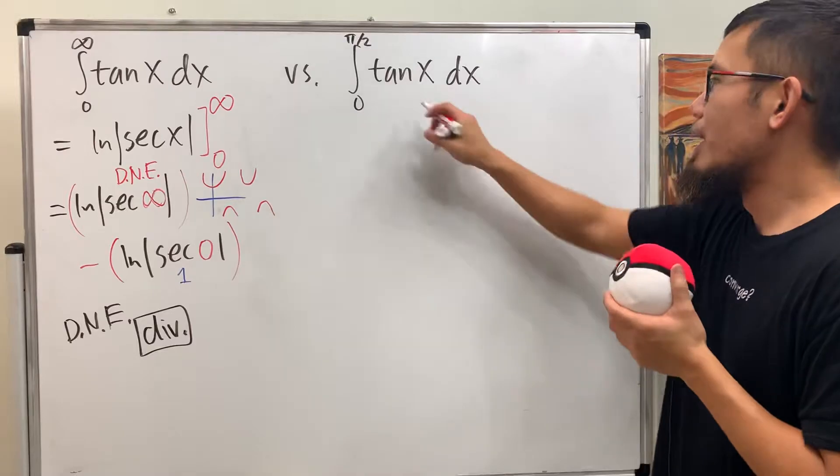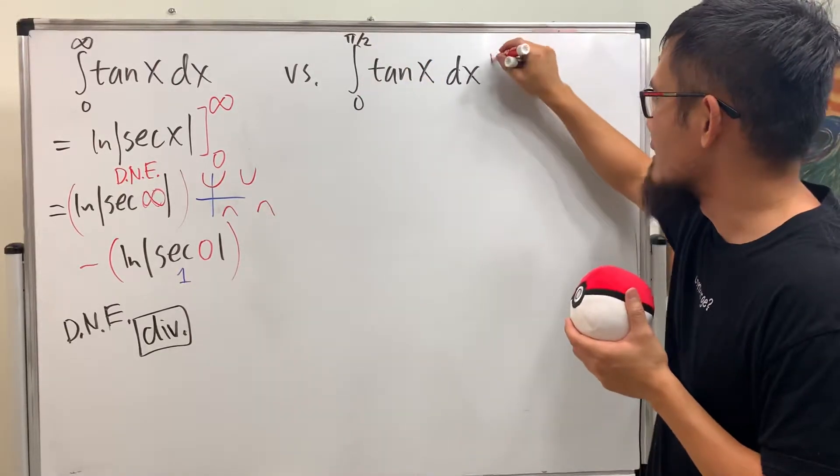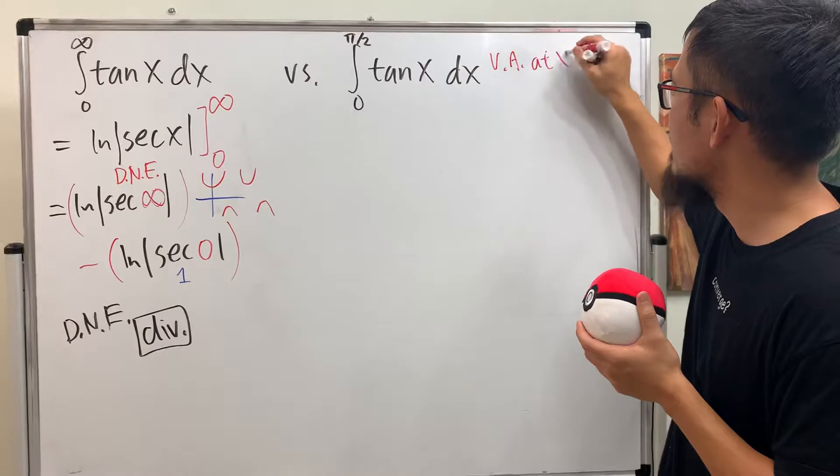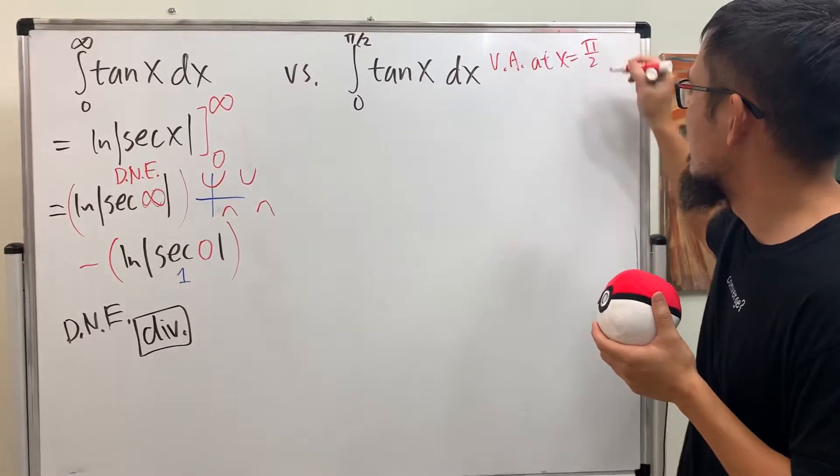Okay, yes. We have a vertical asymptote at π over 2. Very nice.